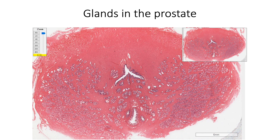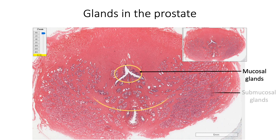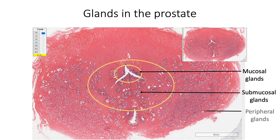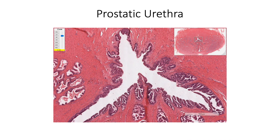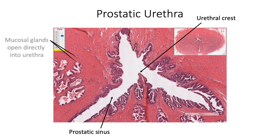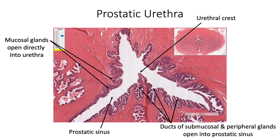Based on their location and termination, prostatic glands are described as arranged in three concentric layers. The innermost circle of mucosal glands opens directly into the urethra. The middle layer of submucosal glands and the outer layer of peripheral glands open into the urethra through their ducts, specifically into the prostatic sinuses on either side of the urethral crest. Here we are seeing a section of the prostatic urethra showing the urethral crest in the posterior midline and prostatic sinuses on either side, with the inner mucosal glands opening directly into the urethra and the ducts of submucosal and peripheral glands opening into the prostatic sinuses.